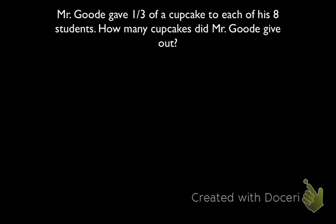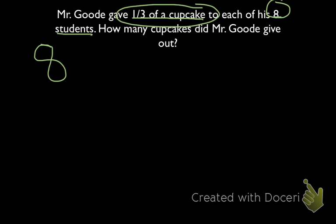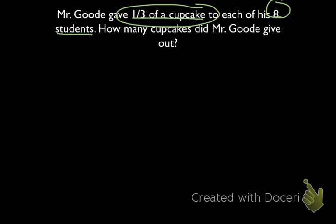First thing, I know this is going to be multiplication because I have 1 third of a cupcake, and I'm giving it to each of Mr. Good's 8 students. So I'm basically taking an equal group, an equal number of an object — 1 third — and multiplying it by 8. So if I were to represent this as an equation, I would get 8 times 1 third, or 1 third times 8. This is multiplication because we are giving out 8 of the same amount of cupcakes.